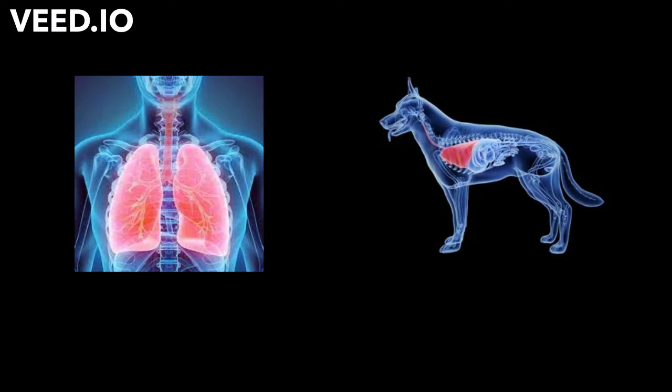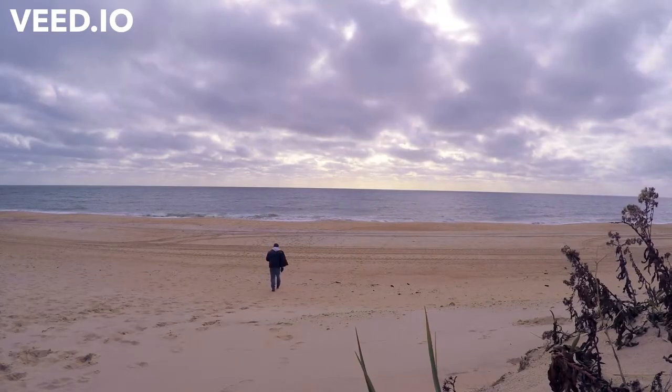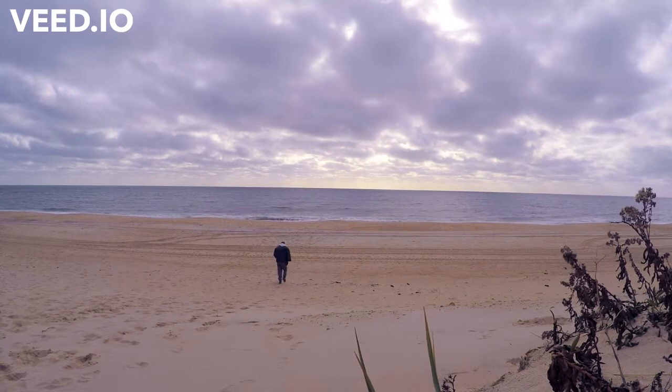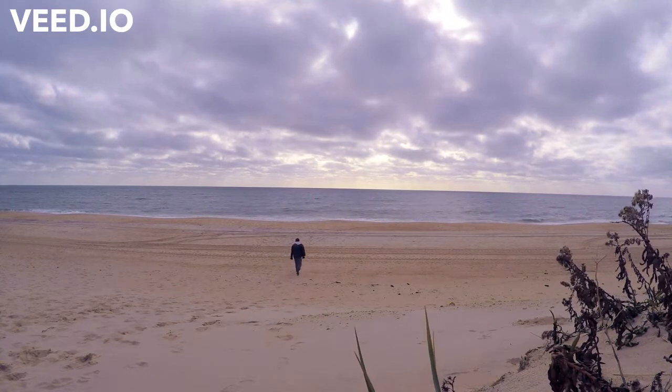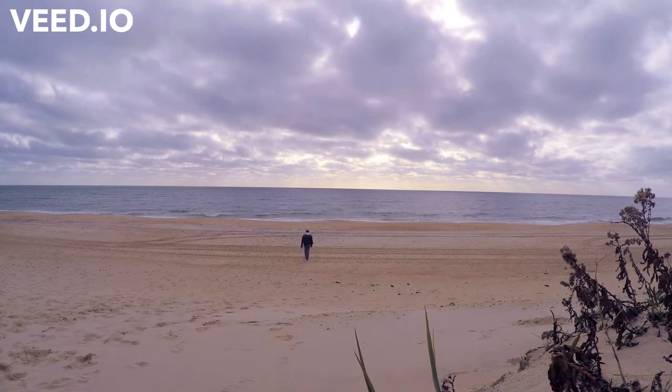Terrestrial animals breathe through lungs and walk on their limbs. All animals move with the help of their forelimbs. Human beings walk on two legs. They have highly developed sense organs and nervous system.